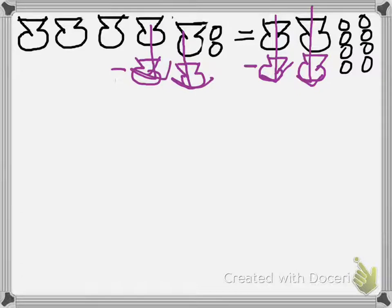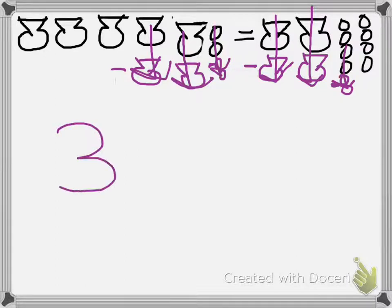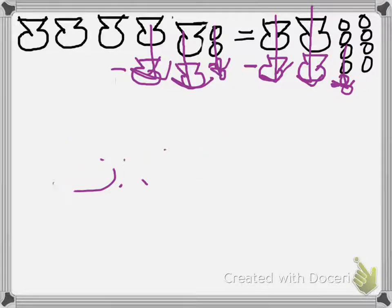We're also going to look at how many coins we can undo. I'm going to remove 2 coins here and subtract 2 over here as well — undoing those on both sides. So what I'm left with is 3 pouches on this side, and 6 gold coins on the other. That gives us 3x equals 6.